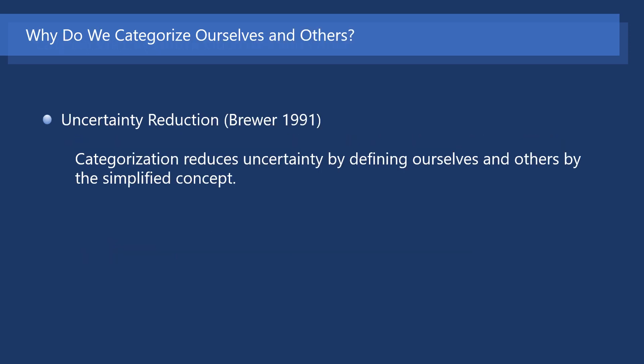So, why do we categorize ourselves and others? One of the reasons is to reduce uncertainty. When we categorize ourselves and others concisely, we have difficulty in understanding ourselves and others, resulting in a feeling of anxiety. Categorization reduces uncertainty by defining ourselves and others by a simplified concept. Moreover, in categorization, we group ourselves and others by simple criteria of similarity, enabling us to view the people around us in a simplified way.